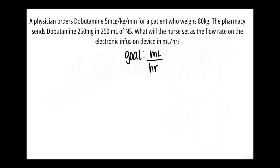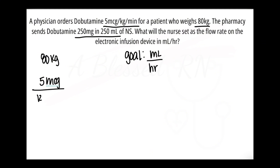The first thing you do in all your problems is read the problem in its entirety and find out exactly what the question is asking. Since this is a weight-based problem, we need the three P's: the weight, the prescription, and the product. The patient's weight is 80 kilograms, the prescribed amount is 5 micrograms per kilogram per minute, and the concentration of the product is 250 milligrams per 250 mL.